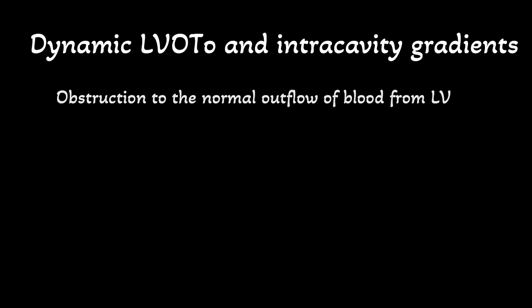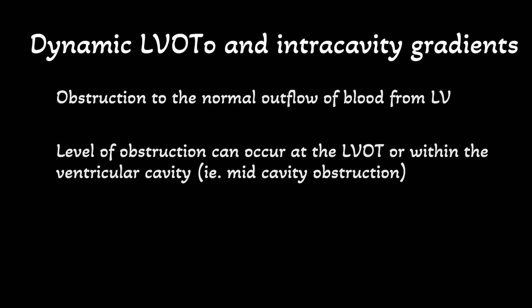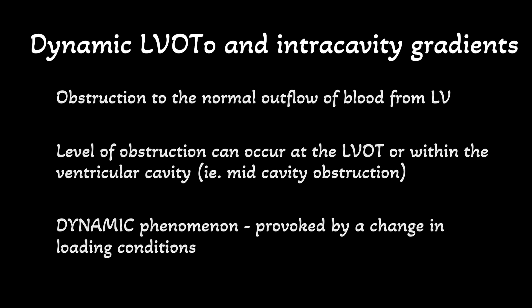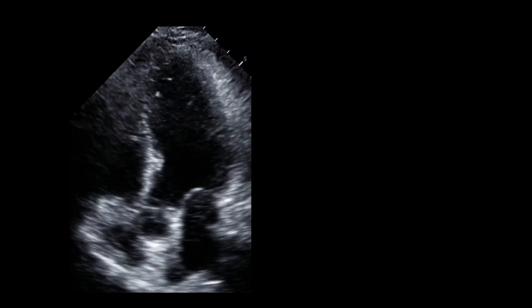Let's talk about the diagnosis of dynamic left ventricular outflow tract obstruction and intracavitary gradients. It is defined as an obstruction to the normal outflow of blood from the left ventricle. Obstruction can occur at the left ventricular outflow tract itself or somewhere within the ventricular cavity. Importantly, this is a dynamic phenomenon that occurs when anatomic and/or physiologic risk factors coincide with certain loading conditions. An easy way to understand this pathophysiology is to look at hypertrophic cardiomyopathy, which is an anatomic risk factor for the development of dynamic LVOTO.